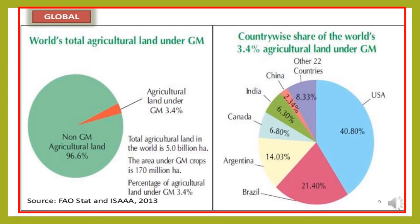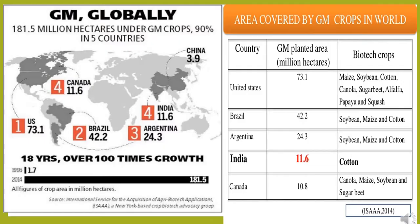The graph represents the contribution of genetically modified crops to the total agriculture crops. On a global basis, GM crops are contributing around 3.4% to agriculture land, while non-GM agriculture land is about 96.6%, as per FAO and ESA 2013 data. The total agriculture land in the world is about 5 billion hectares and the area under GM crops is 170 million hectares, which is around 3.4%. Country-wide share of the world's 3.4% GM crops: USA is contributing 40.8%, Brazil 21.4%, Argentina 14%, Canada 6.8%, India 6.3%, China 2.3%, and other 22 countries 8.4%.